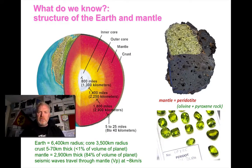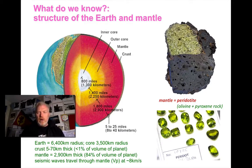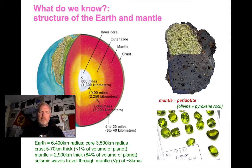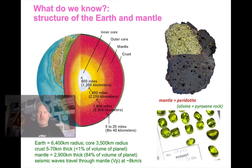We know from seismic evidence the structure of the Earth and the mantle — we covered this back in topic F4.1. We know that the mantle is made of peridotite. We find these lumps of peridotite, these mafic inclusions in igneous rock, chock full of olivine, brought up by volcanoes from the topmost part of the mantle, to give us that clue about what it's made of.